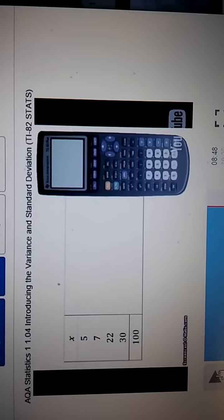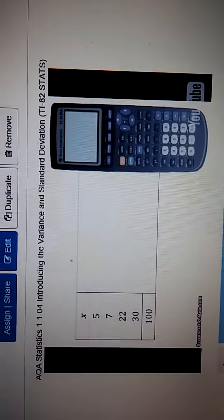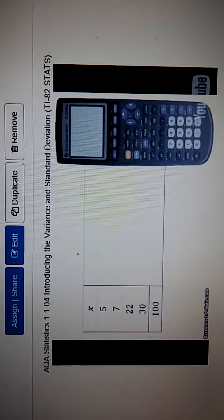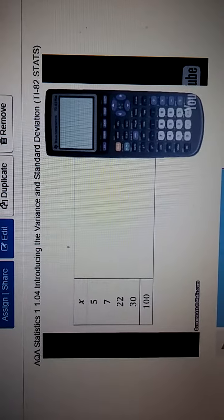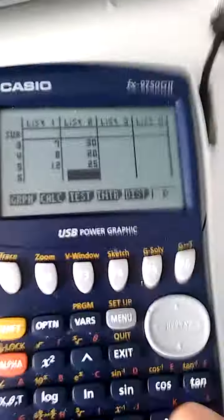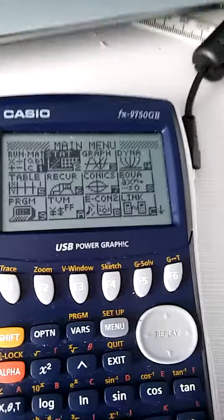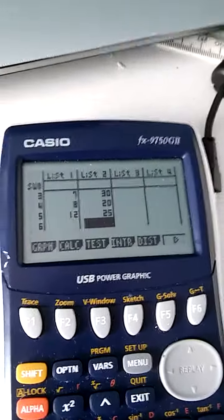Well, here we are again. Let's work out how to do this on the Casio calculator. So we've got to find the standard deviation for that set of data. Turn your calculator on, go to the menu, choose statistics.